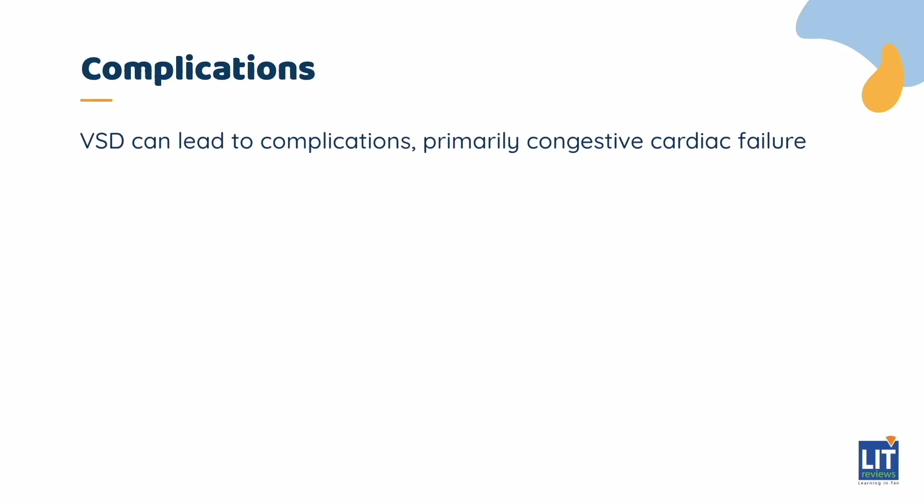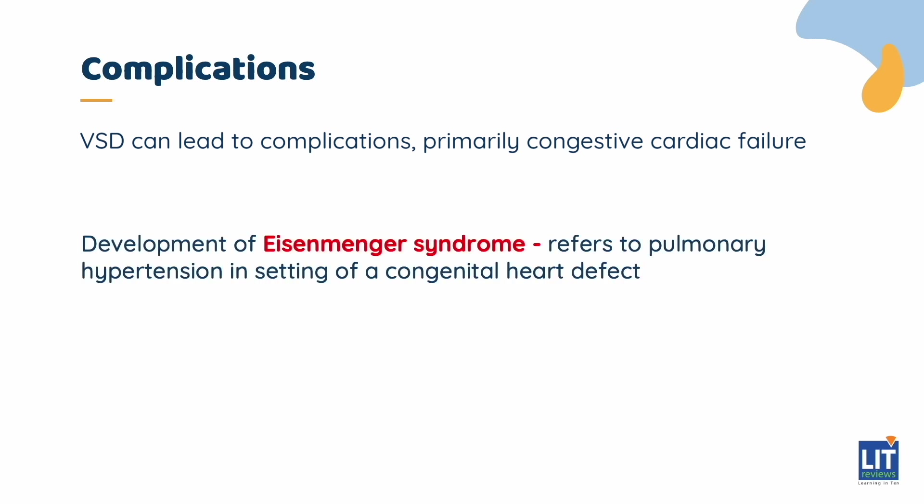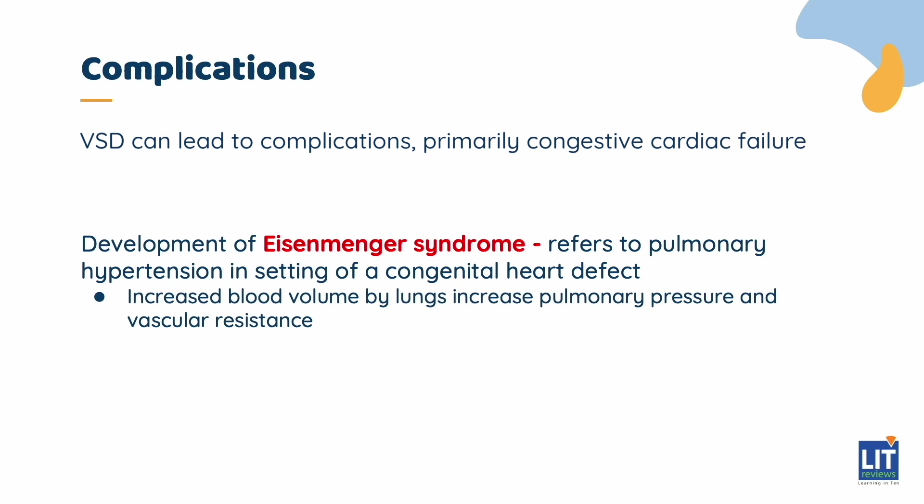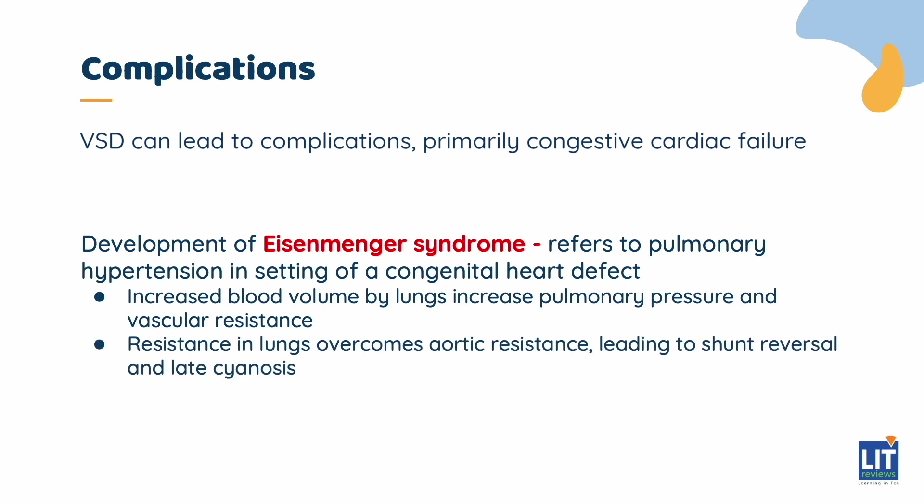VSD can lead to complications, primarily congestive cardiac failure. However, an important complication is the development of Eisenmenger syndrome. The increased volume of blood received by the lungs causes increased pulmonary pressure and pulmonary vascular resistance. Eventually, the resistance in the lungs overcomes the resistance in the aorta, leading to a reversal in the direction of the shunt — blood now flows from the right heart to the left, leading to late cyanosis.